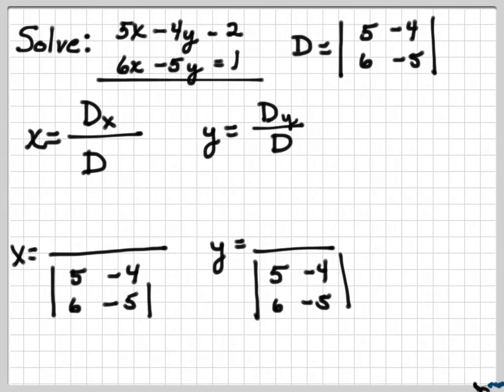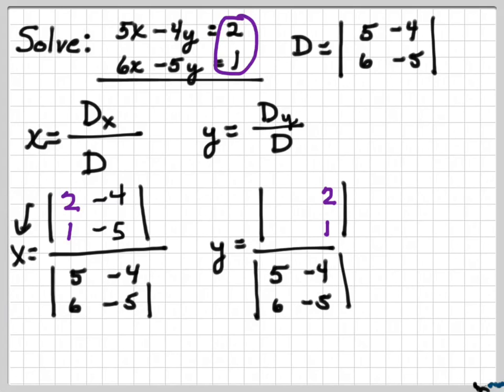Well, the main determinant for both of these is 5, negative 4, 6, negative 5. But now for, what's going to go in the numerator for x is, replace the x column with the answers up here. So I'm going to put 2 and 1 in the x column. And then I'm going to put my negative 4, negative 5 in the y column. And for y, we're going to do the same thing, except now we're going to replace the y column with the 2, 1, and the other column with 5, 6.